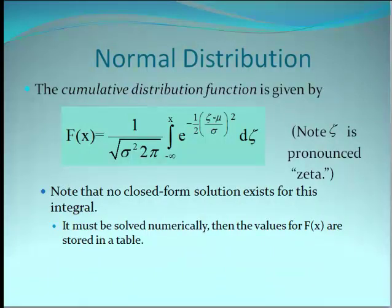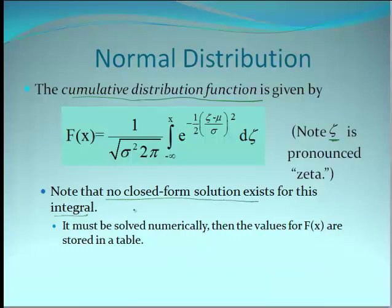The most interesting thing about the normal distribution is this cumulative distribution function. We just integrate it the way we would any probability density function. Notice this value is just pronounced zeta. There is no closed-form solution for this integral — but what it means is we look up the answers in a table, which is actually a lot easier than doing all this cumbersome integration.